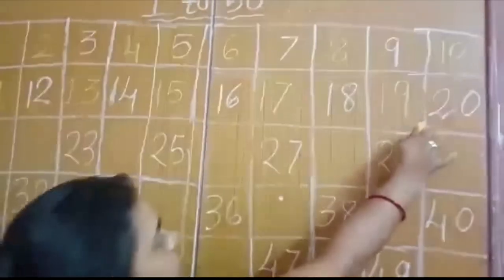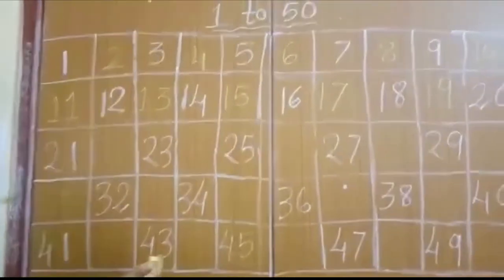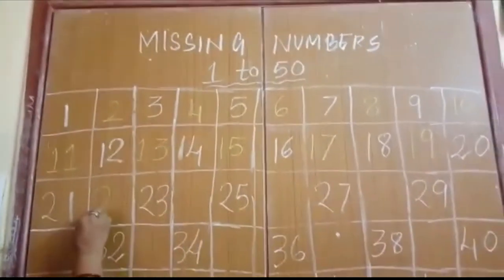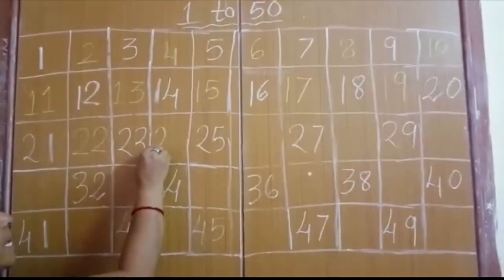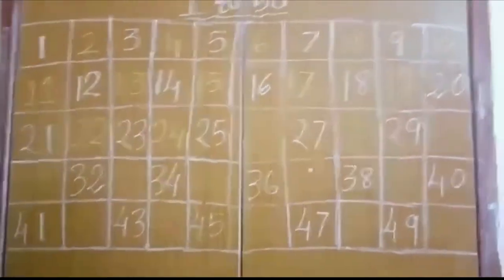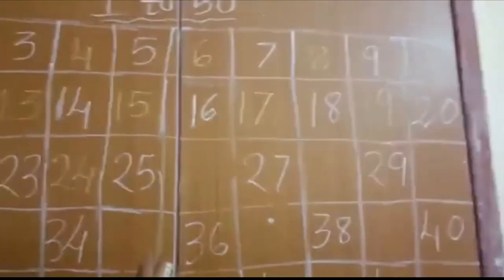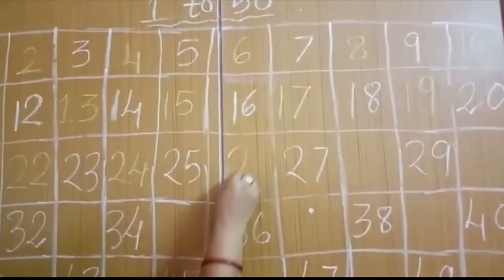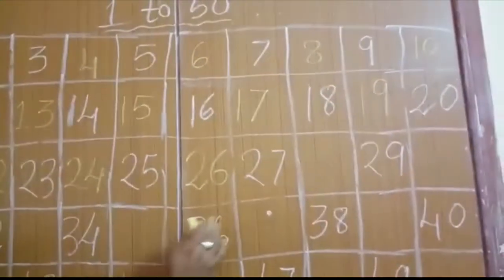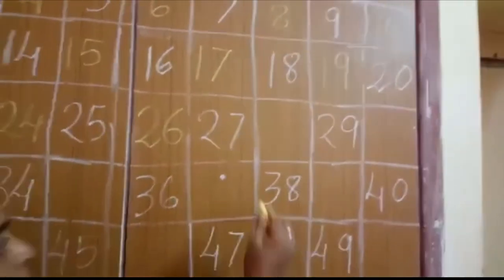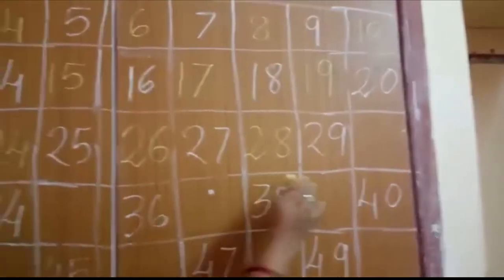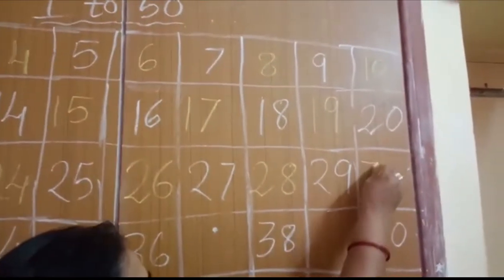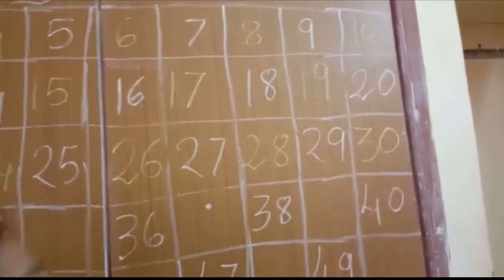So what number will come after 20? 21. What number will come after 21? 22. 23. Then what number will come after 23? Exactly, 24. Then 25. Then what number will come after 25? 26. Then 27. 28. And 29. What number will come? 30 will come after 29.